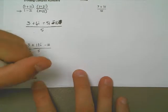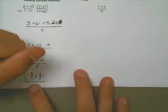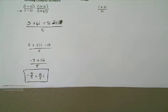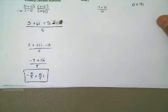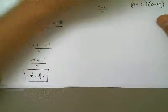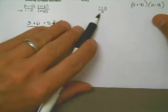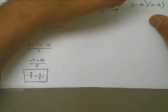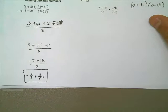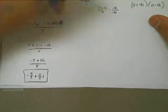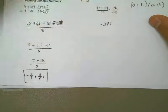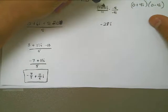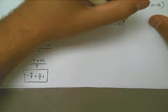One more time. 7 plus 3i all over 4i. Well, really, this is the same thing as 0 plus 4i. And so that means the complex conjugate of this is going to be 0 minus 4i. Now, we're not going to have to foil because there's no 0. That's pointless to write out. But we can multiply both top and bottom by negative 4i. The reason that we do this is because now, this is a distributed property problem on the top. Negative 4i times 7 is negative 28i. Negative 4i times positive 3i is negative 12i squared. And that's going to be all over 4i times negative 4i, which is negative 16i squared.